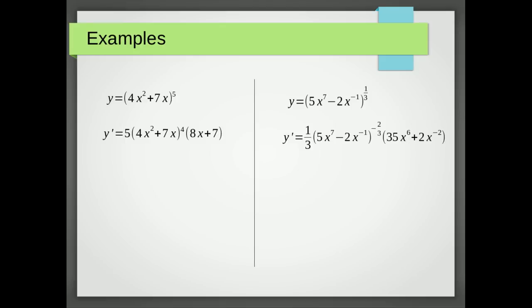A third multiplied by the bracket not changed. Take away one from that power to make it minus two thirds, multiplied by the inner bracket differentiated.